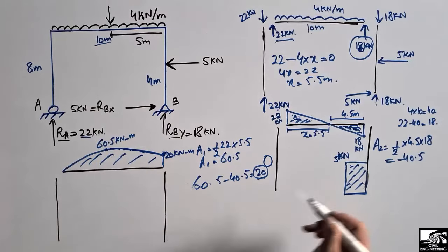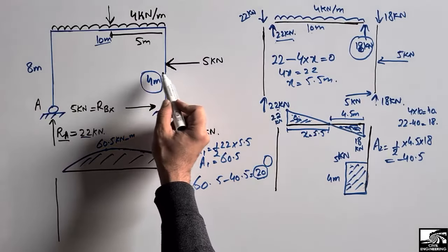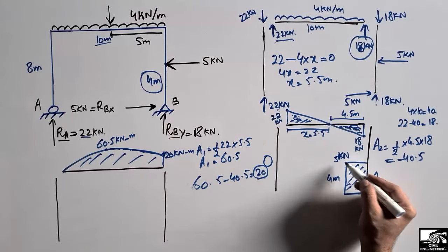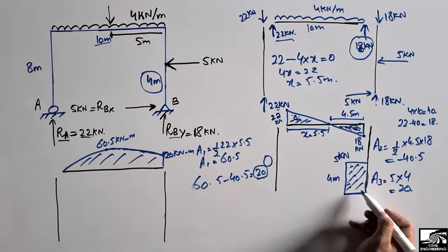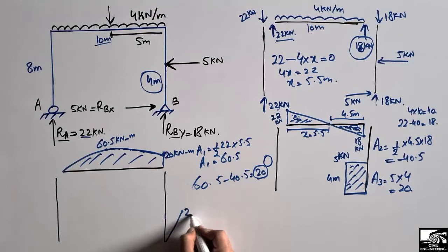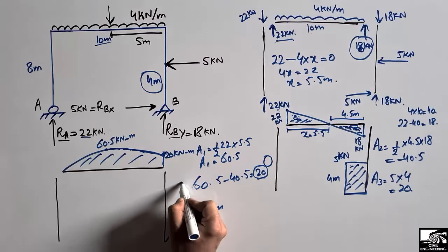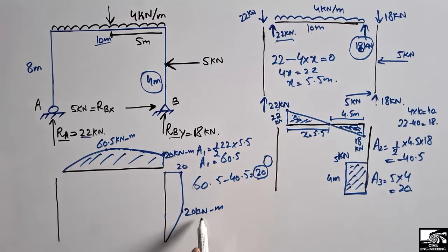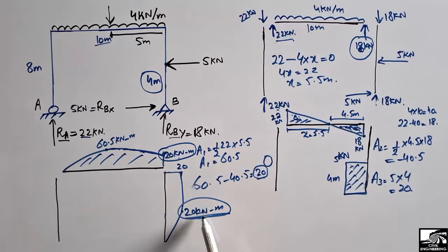For the column with the 5 kN shear force, the load acts at 4 meters from the base. Area A3 = 5 × 4 = 20 kN·m. This means the bending moment in the column is 20 kN·m, which matches exactly the 20 kN·m found at the beam-column joint. This confirms that our bending moment diagram is correct and the frame is in equilibrium.